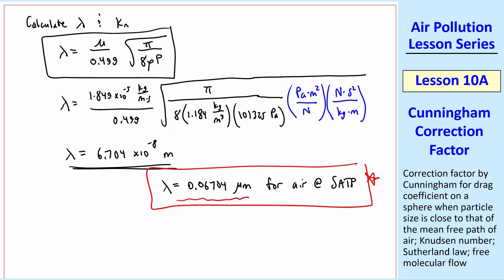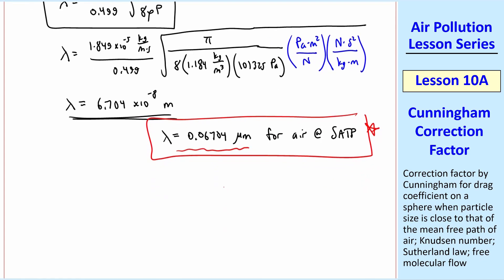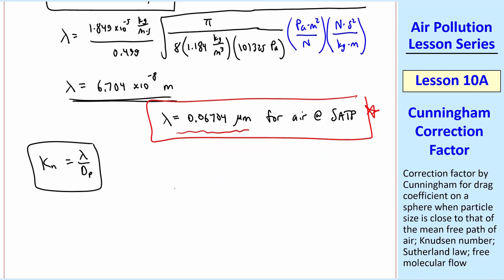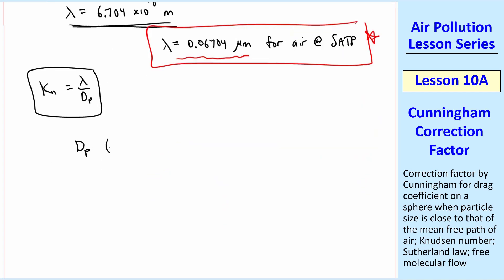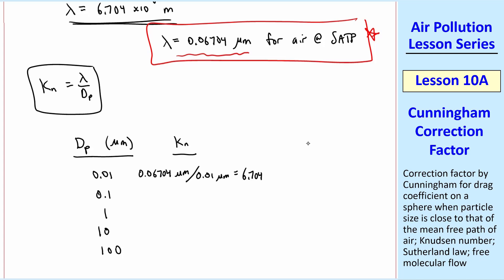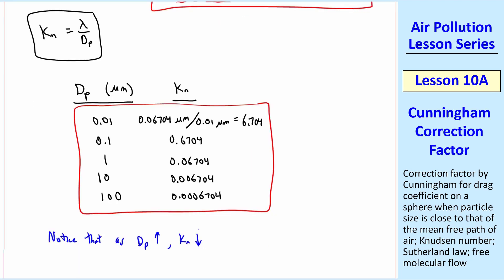This lambda is very small, but for submicron particles, in other words, particles that are smaller than a micron, the free molecular effects become significant, as was mentioned previously. Now let's calculate the Knudsen number. We'll look at various particle diameters. So I'll make a table of particle diameter in microns and Knudsen number. We'll calculate Kn for these five values of dp. For the first one, we get 6.704. And since diameter is going up by a factor of 10, Kn goes down by a factor of 10, since dp is in the denominator and lambda is a constant at SATP. So these are the answers to this example problem. Notice that as dp goes up, Kn goes down.